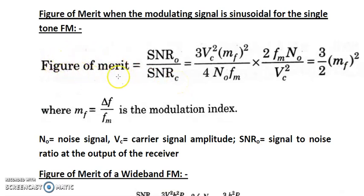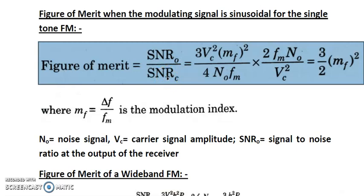As the name indicates, figure of merit tells us how the receiver modifies the input signal-to-noise ratio or carrier signal-to-noise ratio at the input, and what signal-to-noise ratio it provides at the output. Signal-to-noise ratio is signal power divided by noise power, so both the numerator and denominator are ratios themselves.